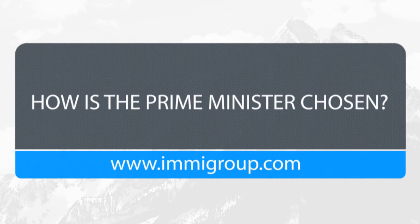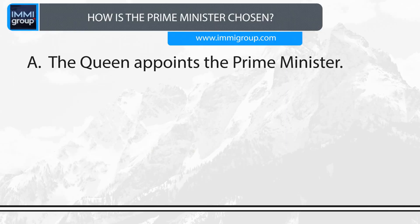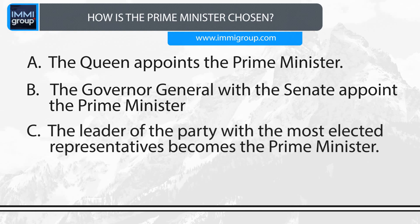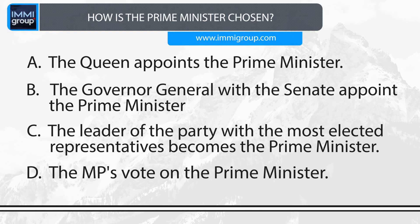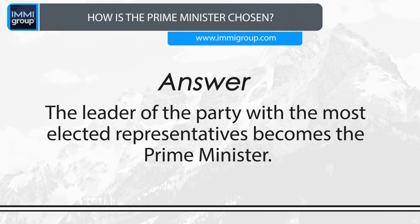How is the Prime Minister chosen? A. The Queen appoints the Prime Minister. B. The Governor General with the Senate appoint the Prime Minister. C. The leader of the party with the most elected representatives becomes the Prime Minister. D. The MPs vote on the Prime Minister. Answer: The leader of the party with the most elected representatives becomes the Prime Minister.